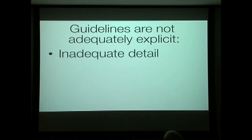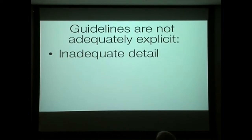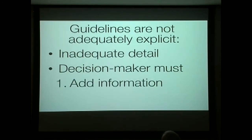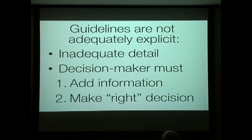Guidelines are very high level. They contain statements like 'reduce world famine' or 'make peace in the Mideast' — nobody's going to argue with that, but how do you do it? The details are not trivial, they're crucial. And the decision maker must do two things: must add information and must make the right decision. Almost always the right decision is unknown. Science is an ongoing dynamic process of moving towards better understanding of the world.